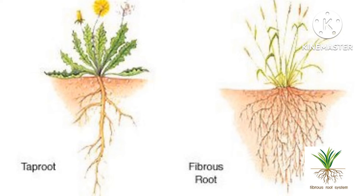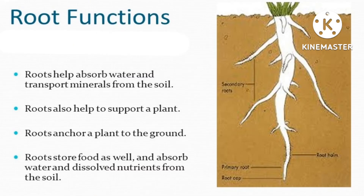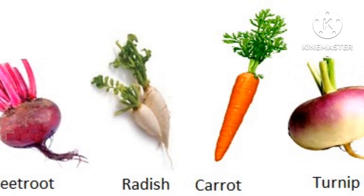Function of the root — roots help a plant in many ways. Roots hold the plant firmly to the soil. Roots absorb water and minerals from the soil. Roots of some plants store food. Roots such as carrot, radish, and turnip have food stored in them. These roots are edible and can be eaten.